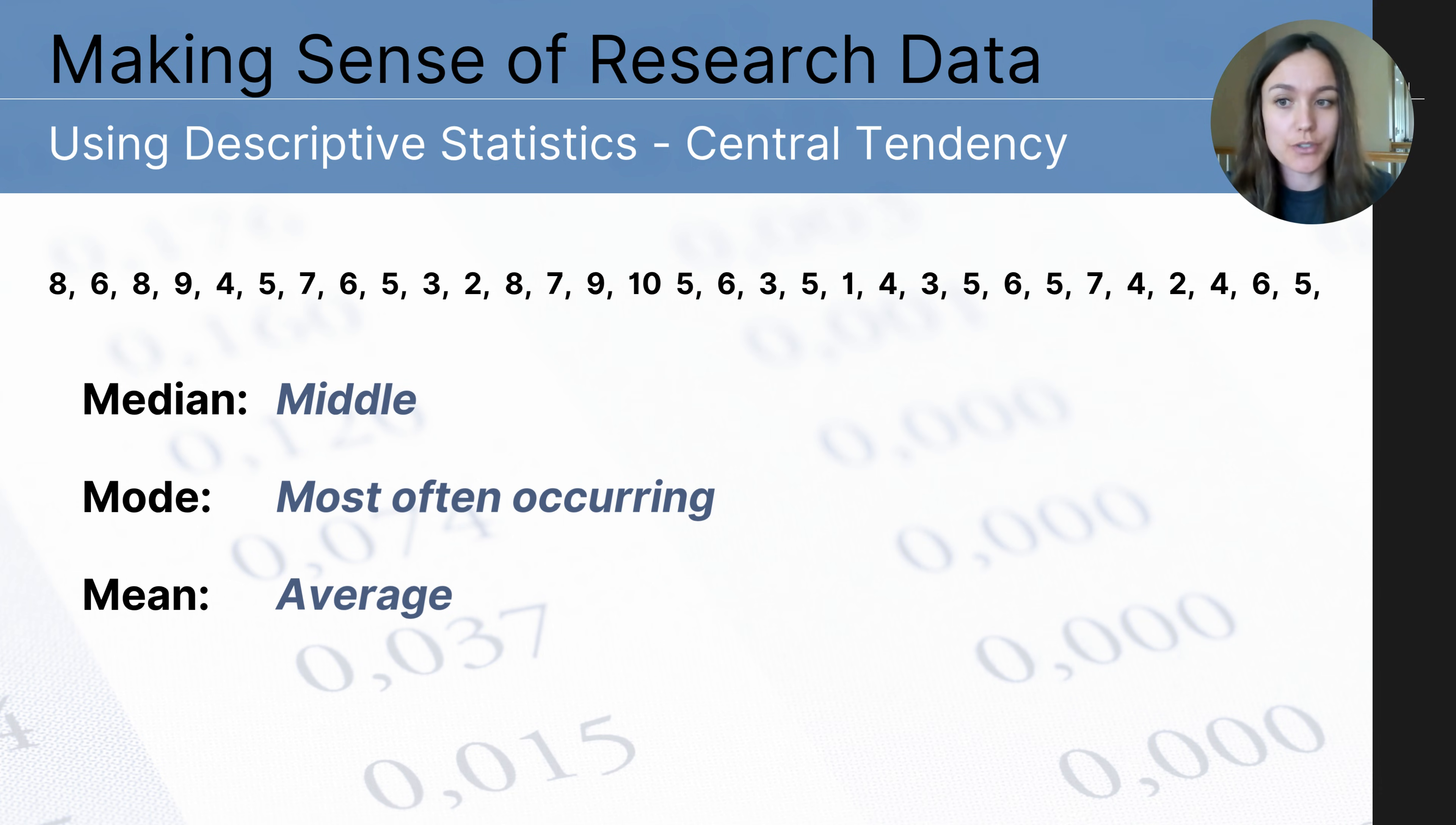The mean is the average of all the numbers and you would find that by adding all of the values together and then dividing by the total number of values in that data set.